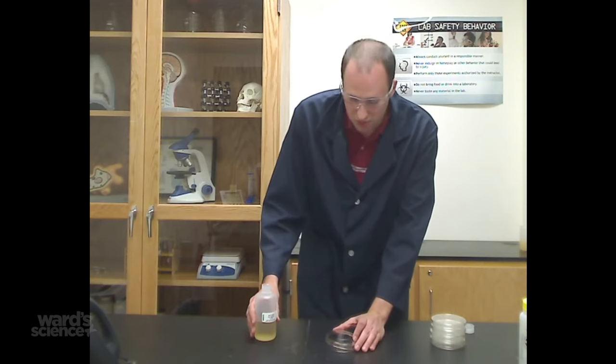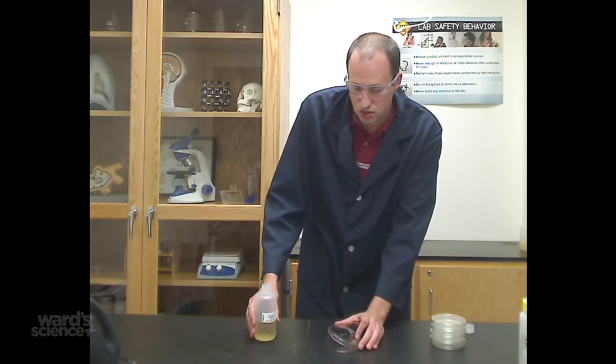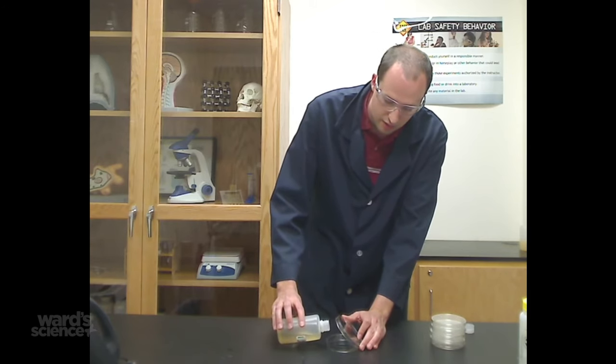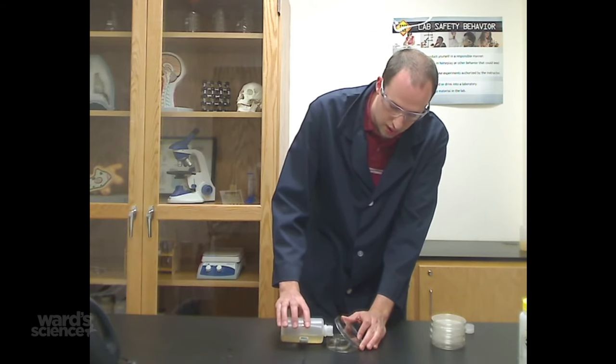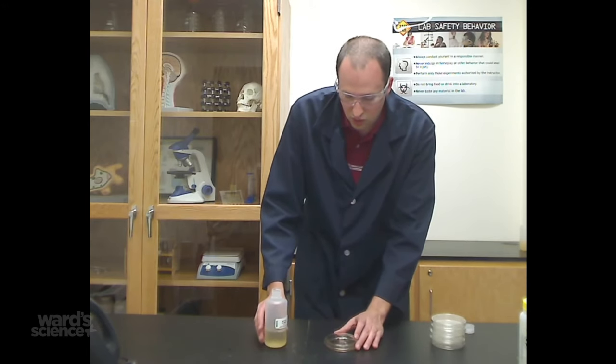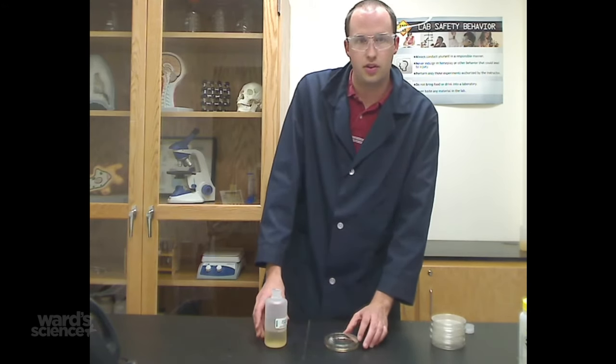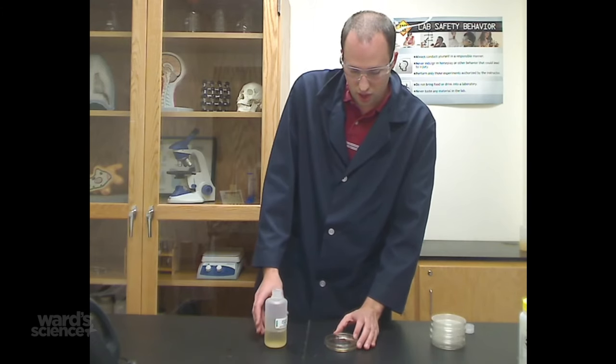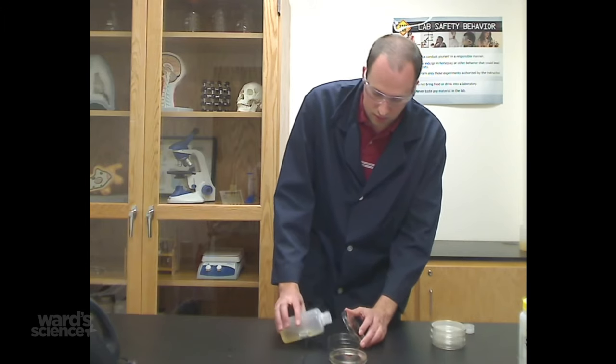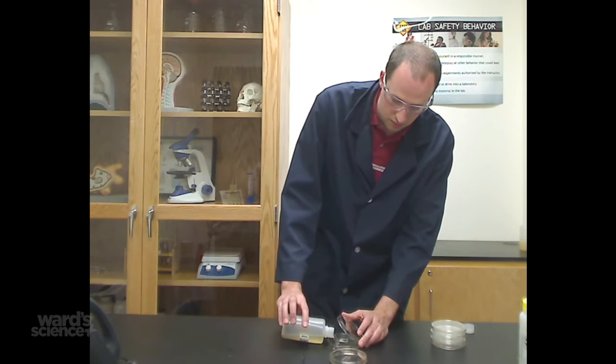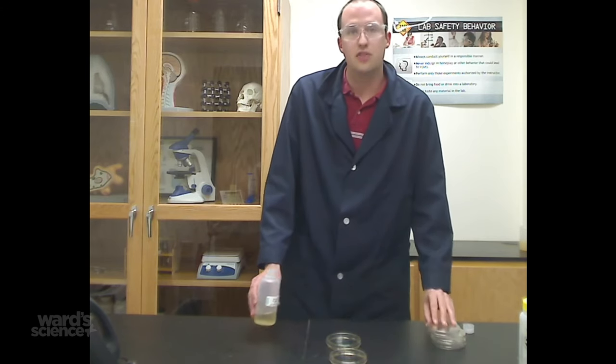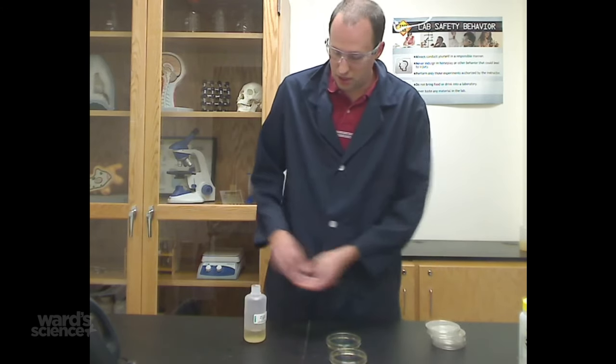To pour each plate, you just, with one hand, barely lift the top off of the Petri dish, pour it in, swirl it around to make sure that it has completely covered the surface of your plate, and set that to the side, and so forth, until the bottle is completely gone.